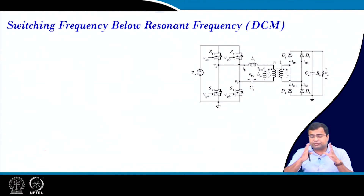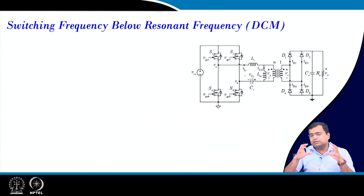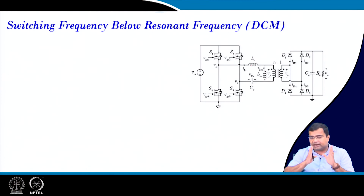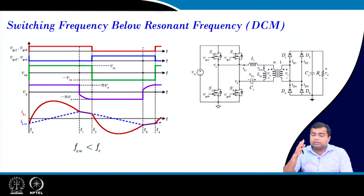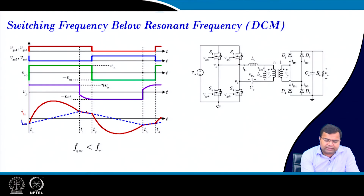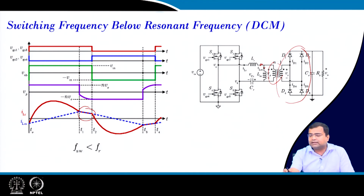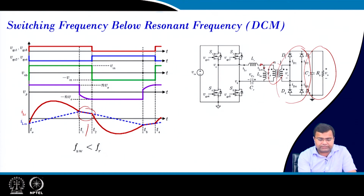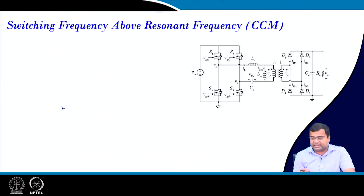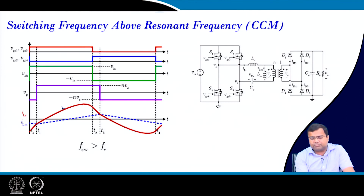For the LLC resonant converter, the operating frequency changes with power level. The objective is to match the switching frequency to the resonant frequency. When power level decreases, switching frequency decreases below the resonant frequency. When the resonant tank current equals the magnetizing current, no current flows in the primary path, the diode stops conducting, and the output side behaves like an open network during that interval. At higher load, switching frequency increases above the resonant frequency.